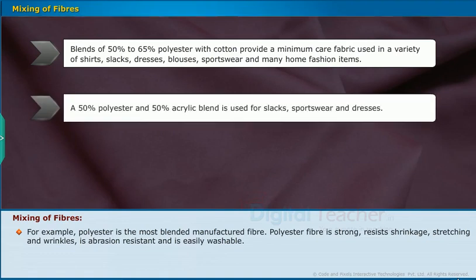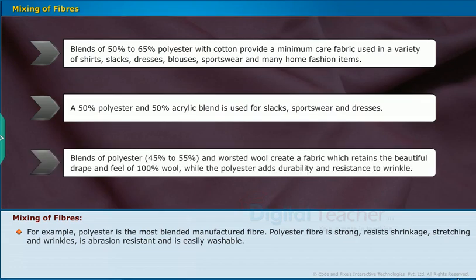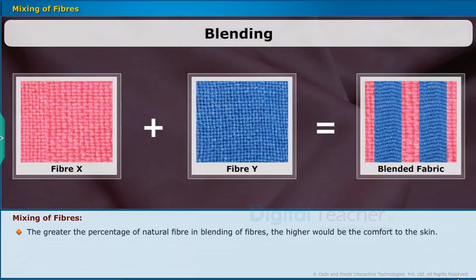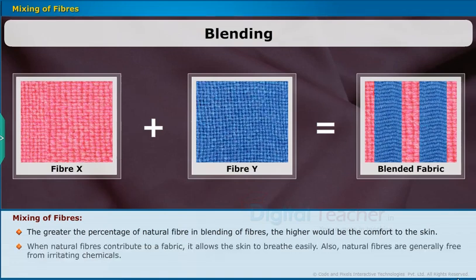A 50% polyester and 50% acrylic blend is used for slacks, sportswear and dresses. Blends of 45–55% polyester with worsted wool create a fabric which retains the beautiful drape and feel of 100% wool, while the polyester adds durability and resistance to wrinkle. The greater the percentage of natural fiber in blending, the higher the comfort to the skin. Natural fibers allow the skin to breathe easily and are generally free from irritating chemicals.